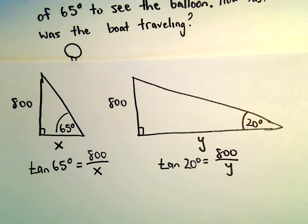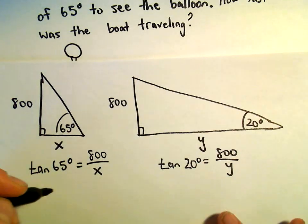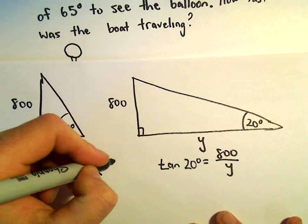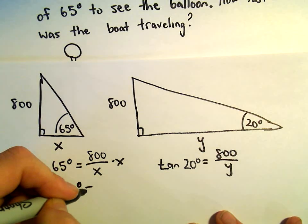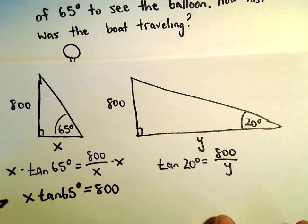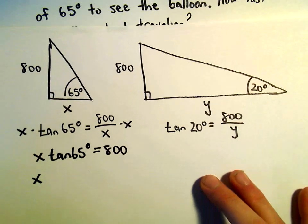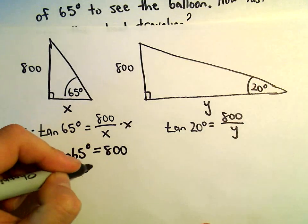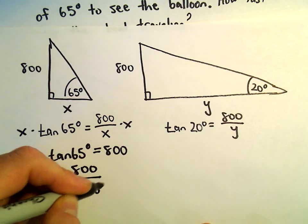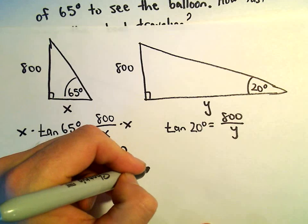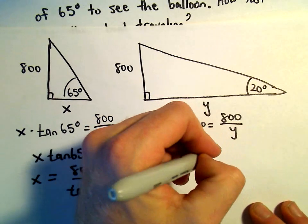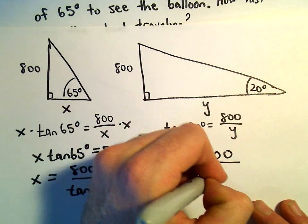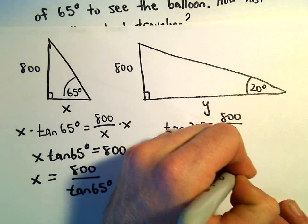I'm going to simply figure out our values here for x and y. We could multiply both sides by x, and that'll give us x times tangent of 65 degrees equals 800. So if we divide both sides by tangent of 65 degrees, we'll get x equals 800 over tangent of 65 degrees. Likewise, if we multiply by y and then divide by the tangent of 20 degrees, we'll get that y equals 800 over tangent of 20 degrees.